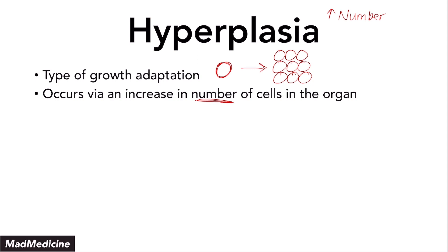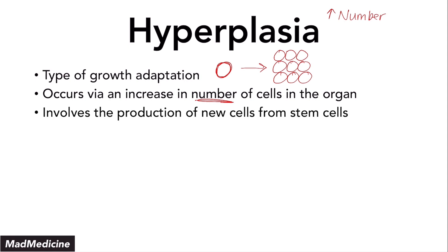You've got to go back to your basic knowledge of medicine. What's going to cause more cells to be made? Stem cells. Hyperplasia involves the production of new stem cells. You are activating the stem cells to produce more cells down the road. That is how hyperplasia functions. In my opinion, hyperplasia is definitely the easier of the two to remember because it's really simple and straightforward.